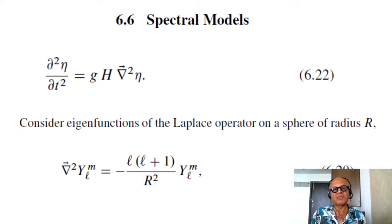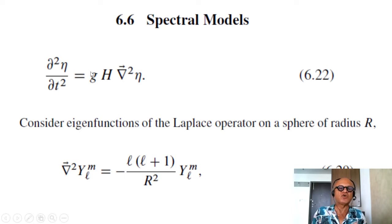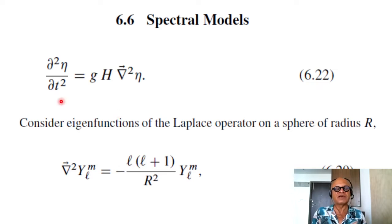So there are other approaches to doing this called spectral models. If we go back to our simplified version of the shallow water equation where we had set rotation to zero and did some derivation to get this wave equation: del squared eta del t squared equals gh grad squared eta. Now this can be represented as eigenfunctions of the Laplace operator on a sphere of radius R. That's a lot of jargon.